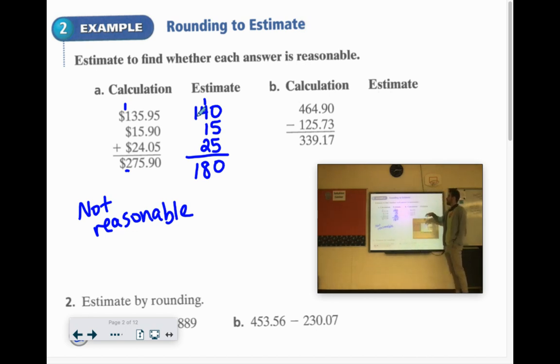Here they did 460.49. Let's call that 460. Minus 125.73. Let's call that 130. Because these will be easy to work with. We're trying to find numbers that are easy to work with in our brain. 60 minus 30 is 30. 4 minus 1 is 3. So we come up with 330. They came up with 339. So yeah, that's reasonable. It's pretty close.